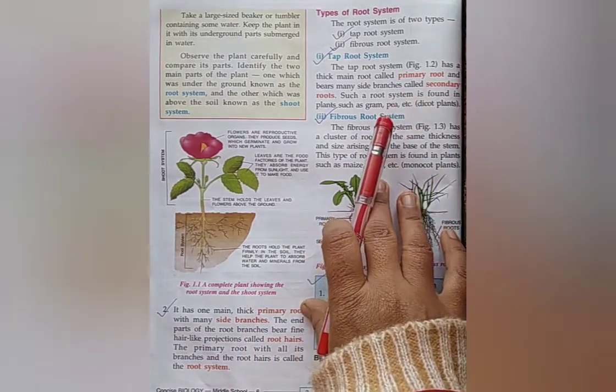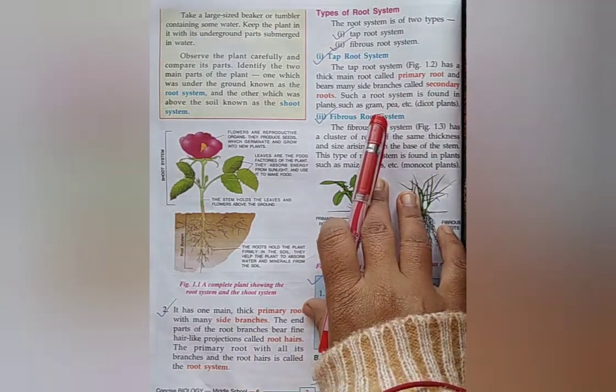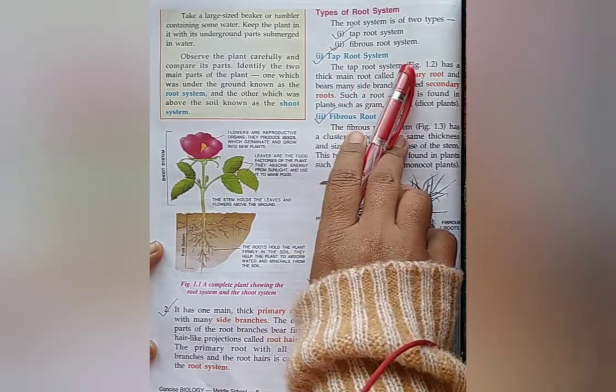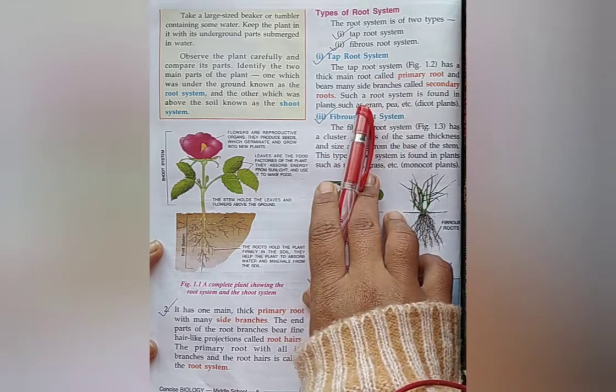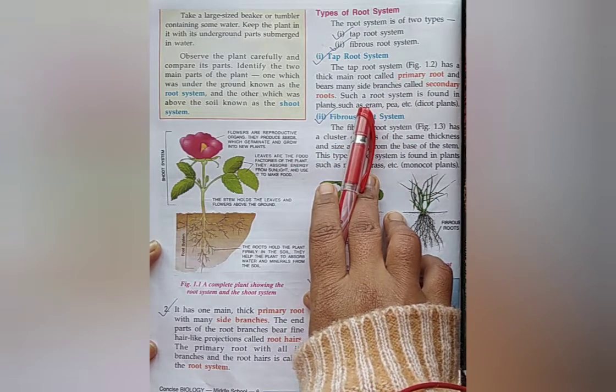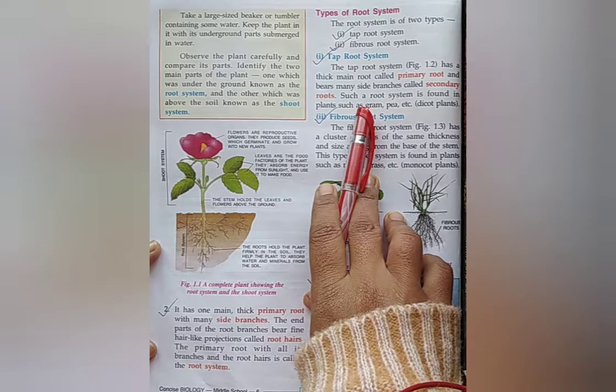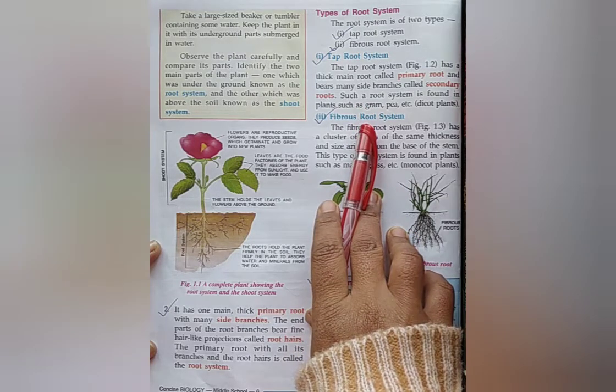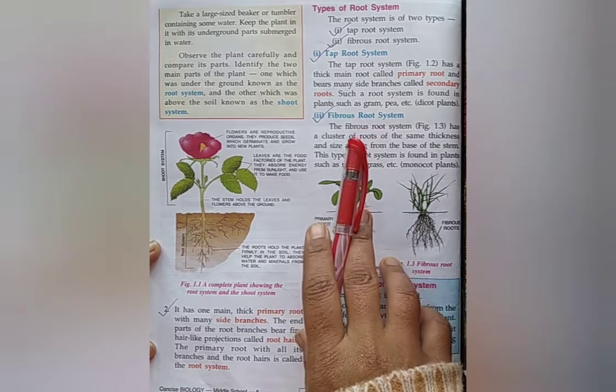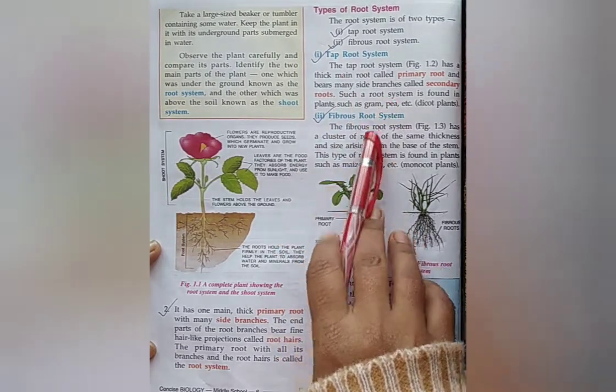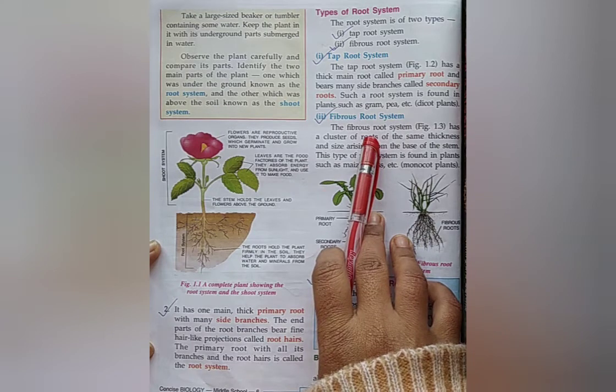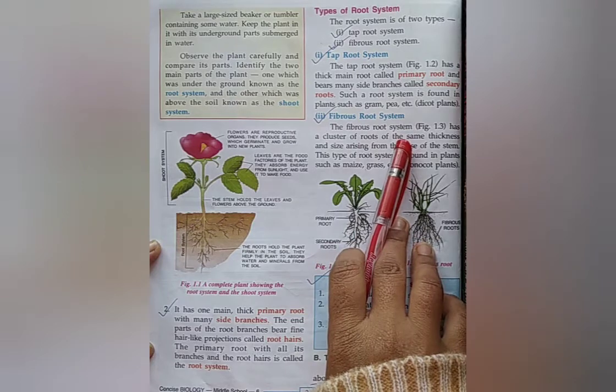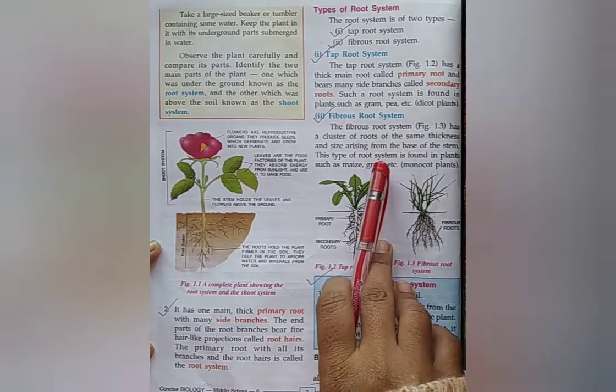Types of root system. Question: Write down the types of root system. Tap root system and fibrous root system. What is primary root? The tap root system has a thick main root called primary root. What is secondary root? The primary root bears many side branches called secondary root. What is tap root system? The tap root system has a thick main root called primary root and bears many side branches called secondary roots.